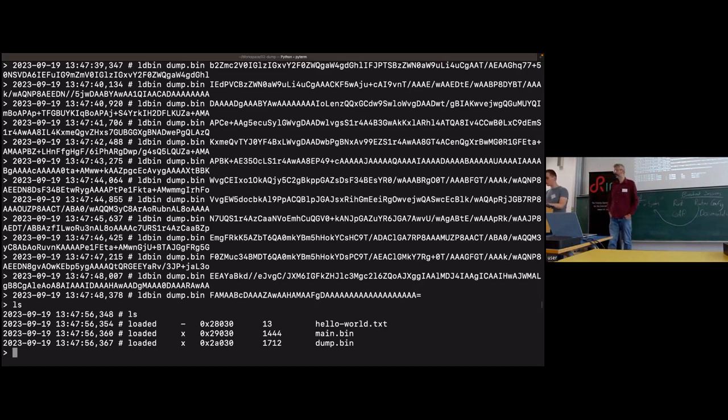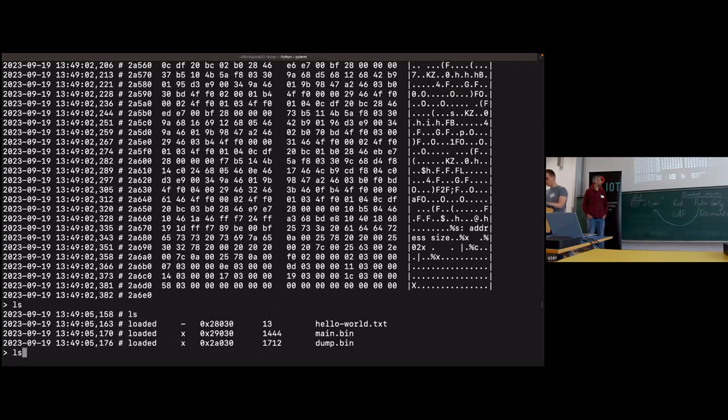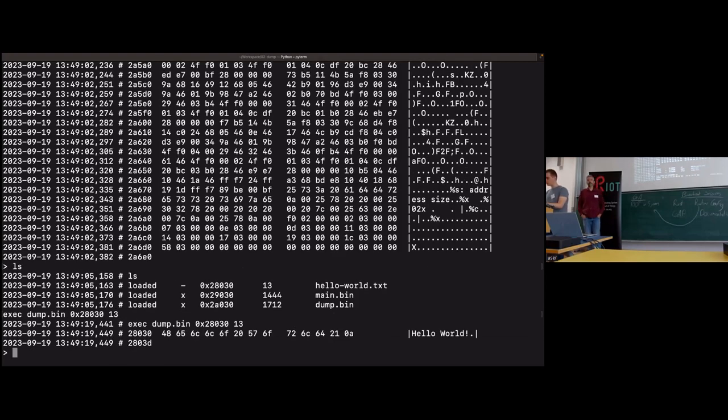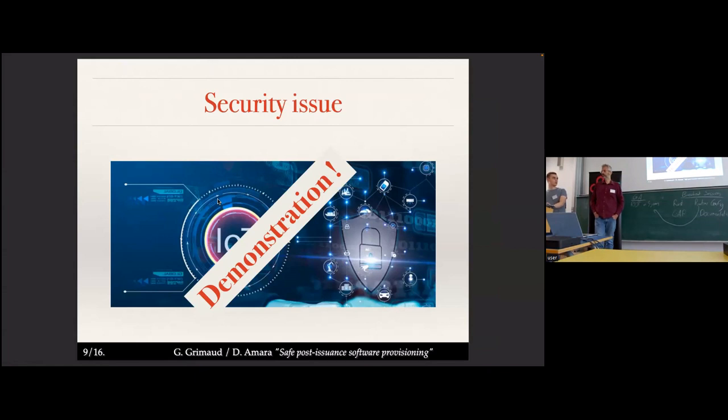So now that we have loaded our dump binary, I can, for example, exec dump.bin with the address of the start address of the dump.bin file. So its size is 1712. So I'm able to dump this memory. And I'm also able, for example, to dump the hello world string. I write the start address of the hello world file with the size. And effectively, I'm able to print the string of the file. So everything is open here. There is no security. So we want to improve this.